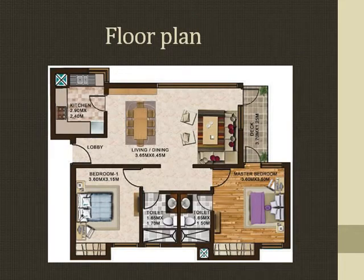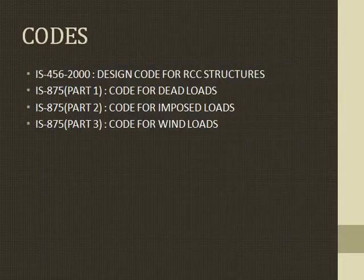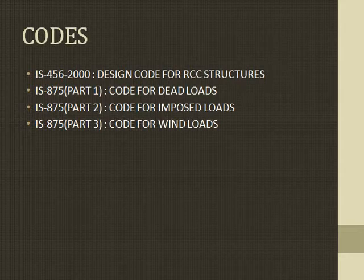Floor Plan. This is the floor plan which shows the kitchen, living room, lobby, bedroom, toilet, and the master bedroom. The different codes followed during designing are IS 456-2000 for the design code of RCC structures, IS 875 Part 1 for dead loads, IS 875 Part 2 for imposed loads, and IS 875 Part 3 for wind loads.